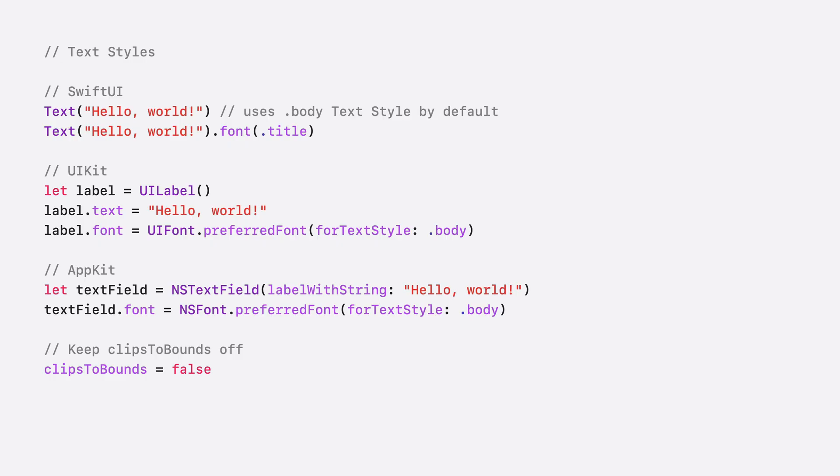Using text styles is really easy. Here are different ways to initialize text styles across SwiftUI, UIKit, and AppKit. Please also remember that clips to bounds, which is off by default, should remain set to false for any labels or text views, because text in many languages needs to render outside the view bounds. Otherwise, it can become illegible.